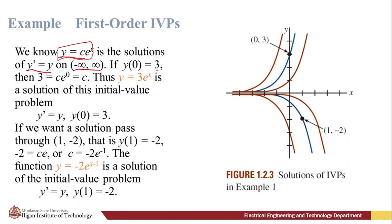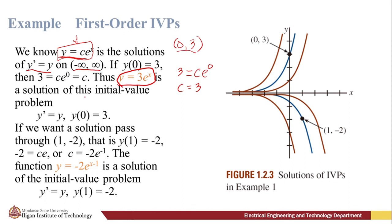it means we choose from the family of solutions a particular solution that passes through the point (0, 3). To find the value of the arbitrary constant c so that the solution passes through (0, 3), we substitute x = 0 and y = 3 into the general solution. We get 3 = ce^0, so c = 3. Thus, y = 3e^x is the solution of this initial value problem.